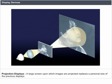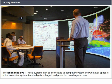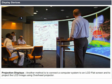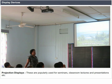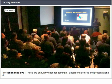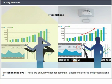Projection displays: A large screen upon which images are projected replaces a personal-size display. These systems can be connected to a computer system and whatever appears on the terminal gets enlarged and projected on a large screen. Another method is to connect a computer system to an LCD flat screen and project the LCD image using an overhead projector. These are popularly used for seminars, classroom lectures, and presentations.